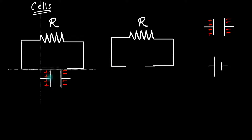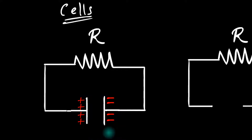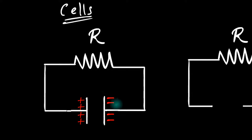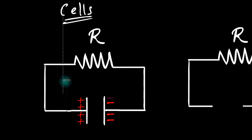Imagine I take a charged capacitor and hook it up against a resistor. What's going to happen? Well, we know that this plate is positively charged and this plate is negatively charged, and positive and negative attract each other. Therefore, the negative charges — the electrons over here — are going to move from here all the way back and try to cancel this positive charge.